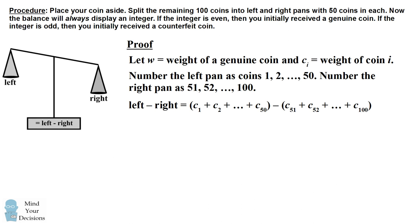We can then write the difference of the weight in the coins on the left-hand pan from the right-hand pan as equaling the sum of the coins in the left pan minus the sum of the coins in the right pan.